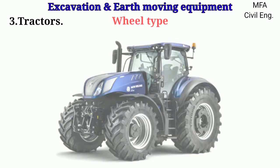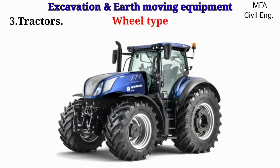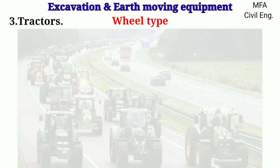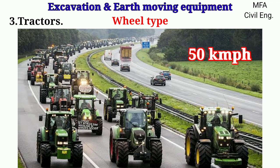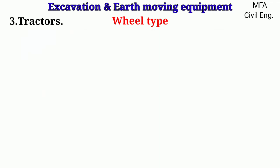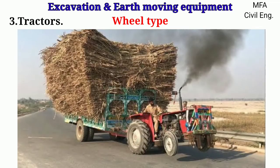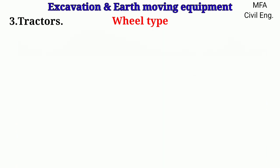In wheel type tractors, the engine is mounted on four wheels. The main advantage is higher speed, sometimes exceeding 50 km per hour. It is used for long distance hauling and on good roads.